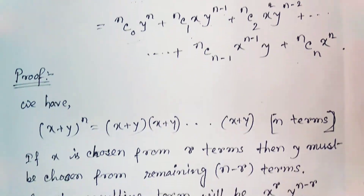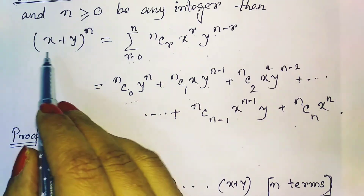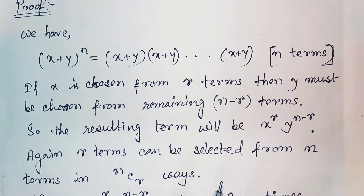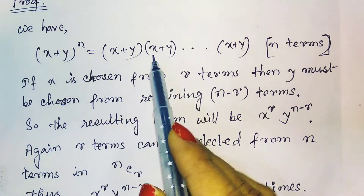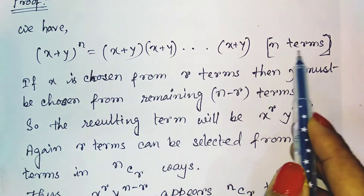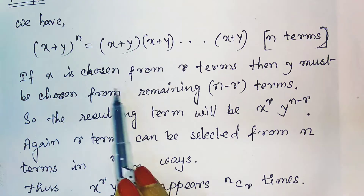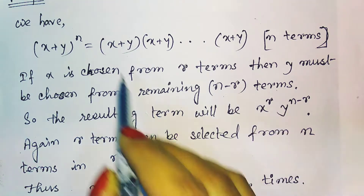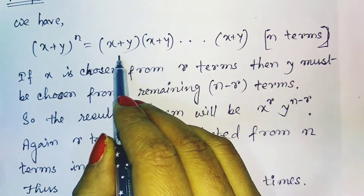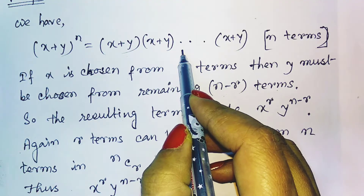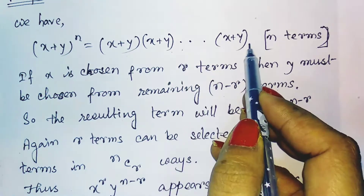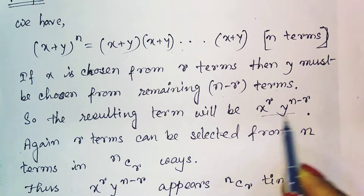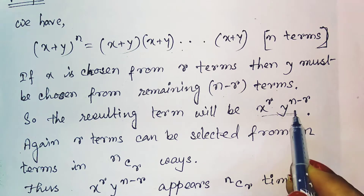Now if we want to prove this, we are supposed to prove that (x + y)^n equals the summation expression. We can write (x + y)^n as (x + y)(x + y)···(x + y) up to n terms. If x is chosen from r terms, then y must be chosen from the remaining n − r terms, giving us terms of the kind x^r · y^(n−r).